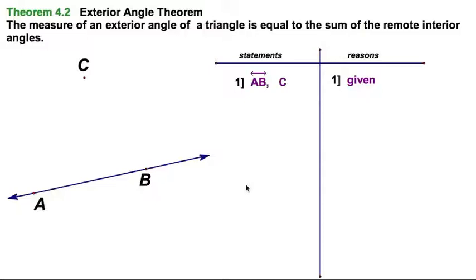So let's proceed with our two-column proof here. Just like we did for the triangle sum theorem, we're going to prove the exterior angle theorem here, starting with a line, in this case AB, and a point not on the line C.